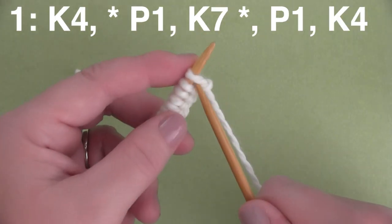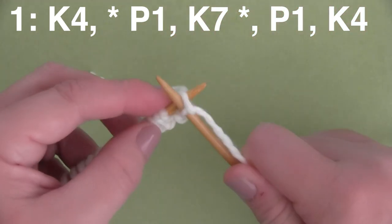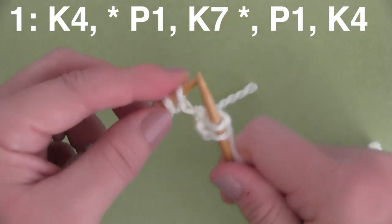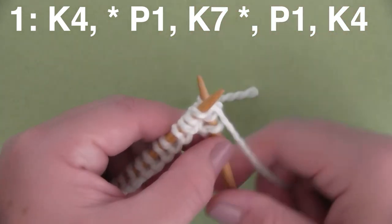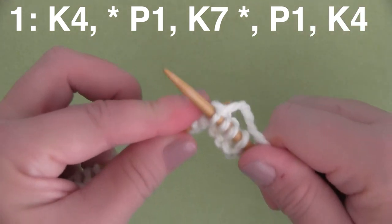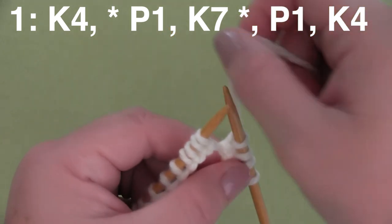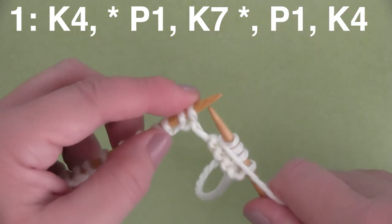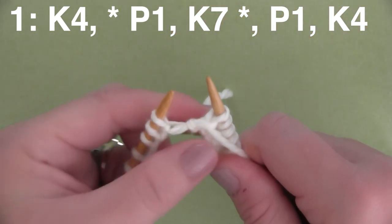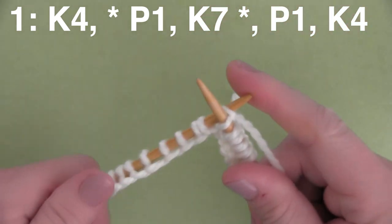Row 1. We begin with knit 4. So we're knitting 4 stitches to begin right here on Row 1. We'll get that little tail out of the way. And then once we have 4 stitches, we're going to be knitting between those asterisks and that means we're repeating the pattern all the way down. So we begin with P1, that is purl 1 stitch. And then this repeat is K7, so we're knitting 7 stitches.